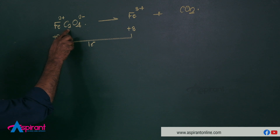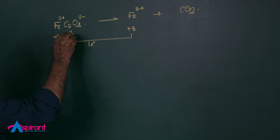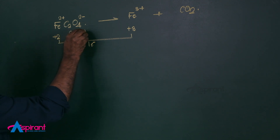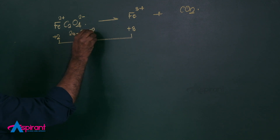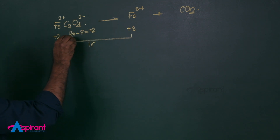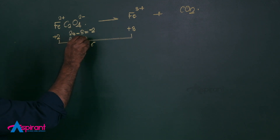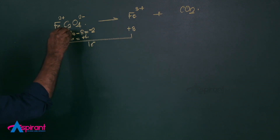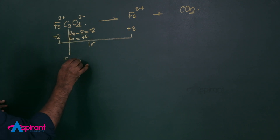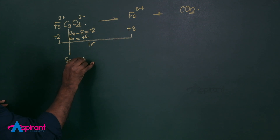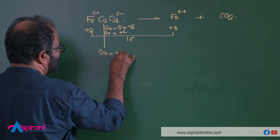For carbon in C₂O₄²⁻: the oxidation state equation is 2x − 8 = −2. Therefore, 2x = +6, so x = +3. This is the oxidation state of carbon in the oxalate ion.